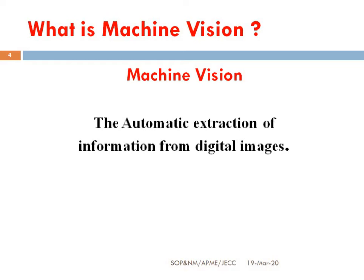The overall machine vision process includes planning the details of the requirements and project, and then creating a solution. During runtime, the process starts with imaging followed by automatic analysis of the image and extraction of the required information. The definition of machine vision may vary, but all definitions include technology and methods used to extract information from an image on an automatic basis, as opposed to image processing where the output is changed to another image. The output can be a simple signal or a complex set of data identifying the position and orientation of each object in the image.